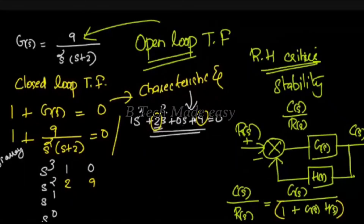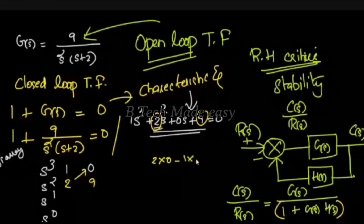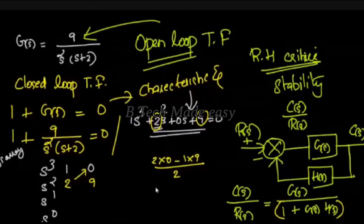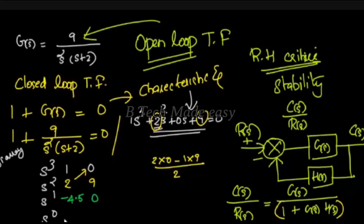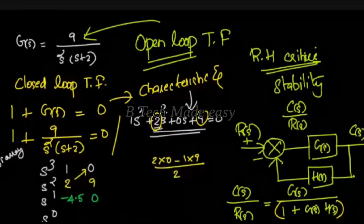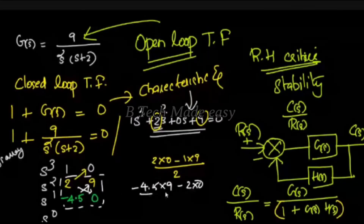2 into 0 minus 1 into 9 divided by 2. Divided by this 2. In this case, you will get minus 4.5. If you want this, you will get 0 into 0.